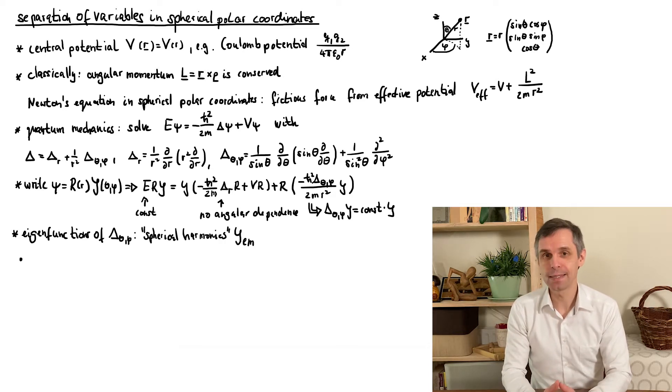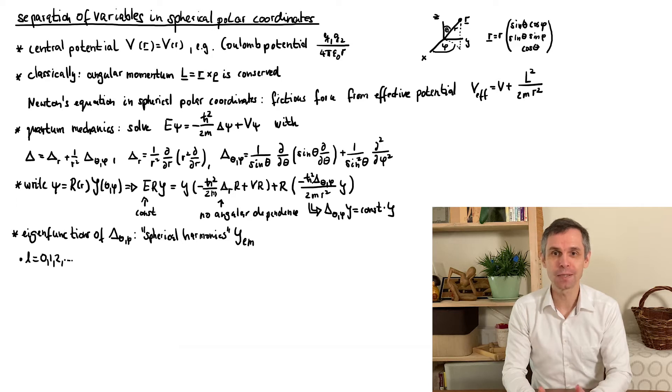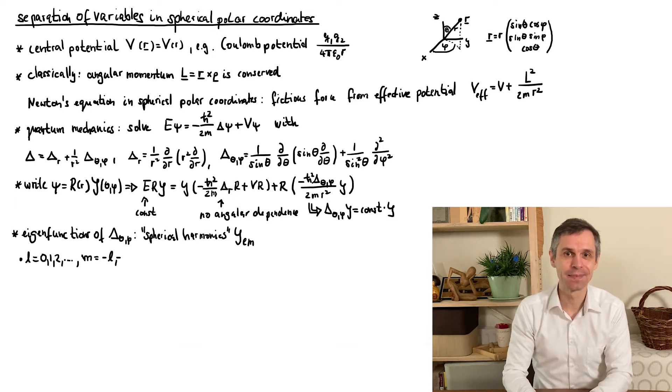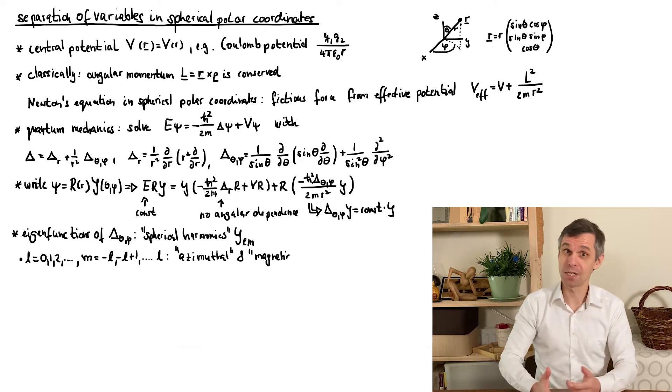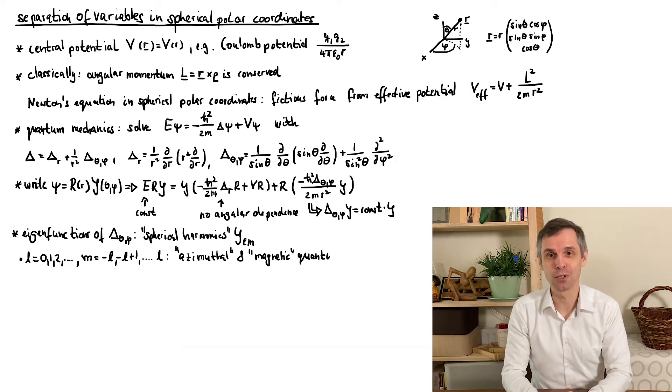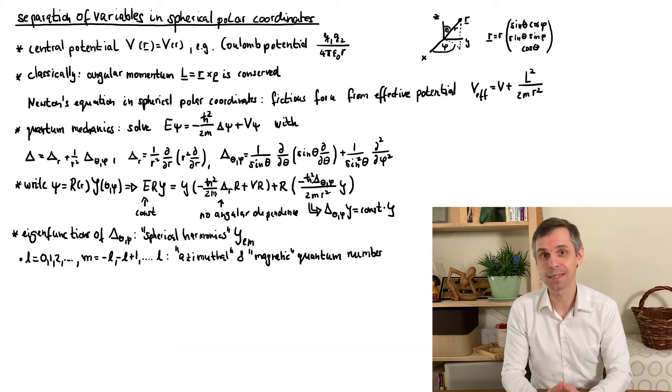These eigenfunctions are known as the spherical harmonics. They carry two indices, L and M, which in our context will turn into quantum numbers. L is the azimuthal quantum number, and M the magnetic quantum number. The symbol M clashes with mass, so we will try to make sure that the context is always clear.